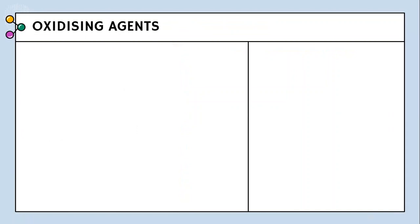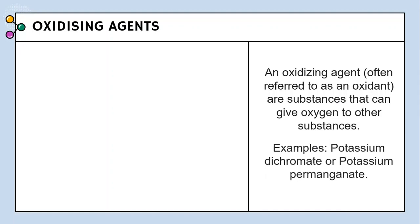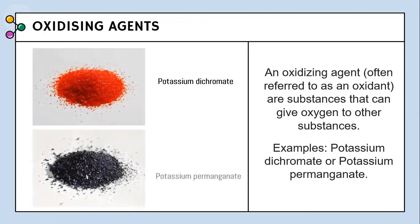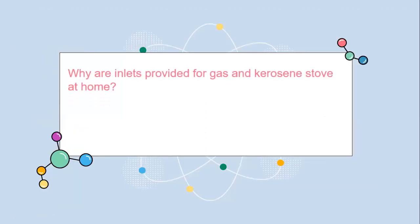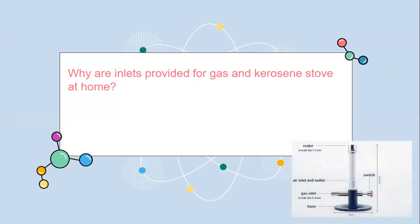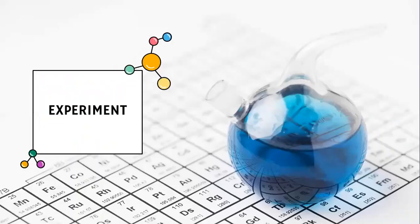Now what are oxidizing agents? These are substances that can provide oxygen to other substances. They are also called oxidants. Examples of oxidizing agents are potassium dichromate and potassium permanganate. Now the question is, why are inlets for gas and kerosene stoves provided at home? The answer is because of these inlets, the gaseous fuel is mixed with sufficient oxygen and a clean blue flame is obtained.